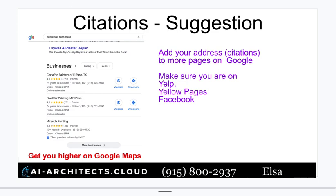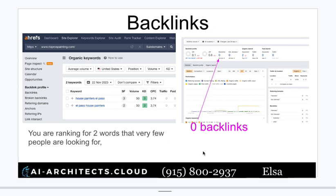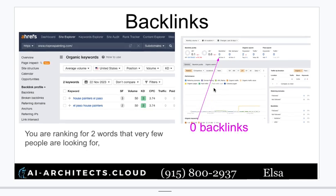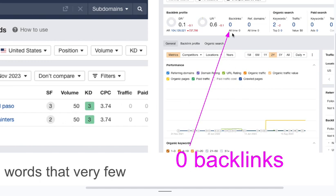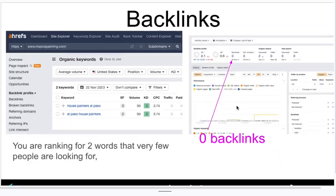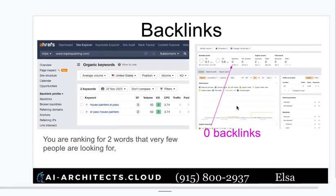The other thing to consider is backlinks. I looked you up in Ahrefs — another tool we use often for SEO. The keywords you're being searched under are 'house painters in El Paso' and 'El Paso house painters,' which is great because you have very low competition: your keyword difficulty is 3, and the lower that number the better. However, not very many people are searching for painters.